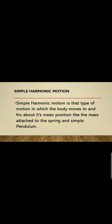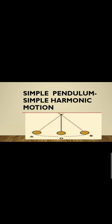Let's discuss what simple harmonic motion is. Simple harmonic motion is that type of motion in which a body moves to and fro about its mean position — like the mass attached to a spring and the simple pendulum. The mean position is the center point. In the diagram, point O is the mean position and the body moves from extreme point A to extreme point B. The motion of the simple pendulum always starts from the mean position.